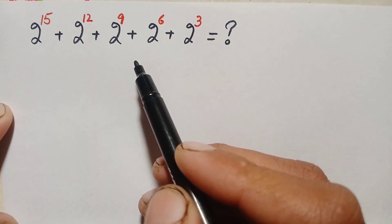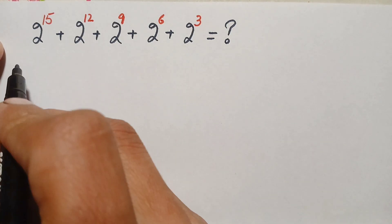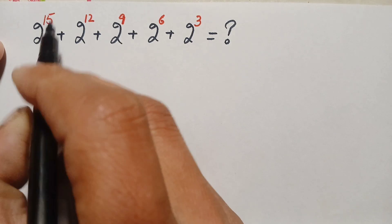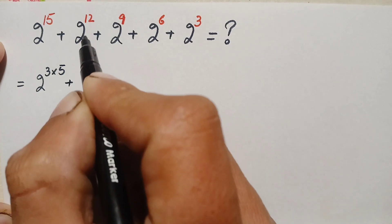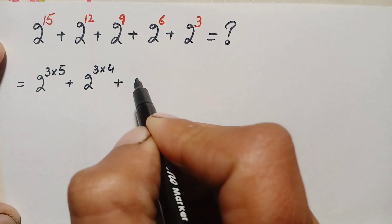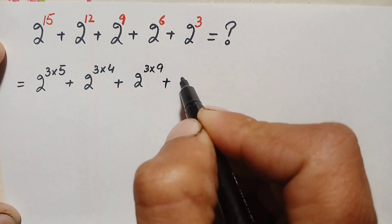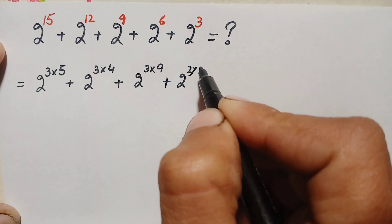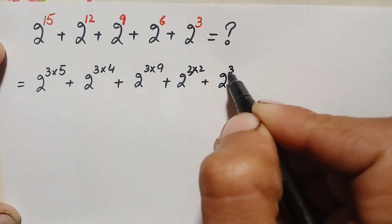We will try to solve this problem without using a calculator. First, we will try to factorize the powers. So 2 raised to power 15 can be written as 3 times 5, which is 15; 2 raised to power 12 as 3 times 4; 9 as 3 times 3; 6 as 3 times 2; and 2 raised to power 3 remains the same.